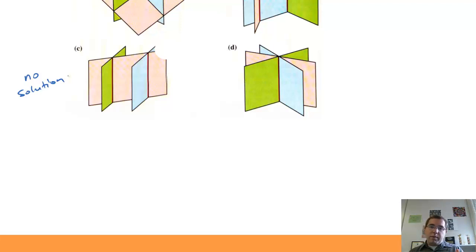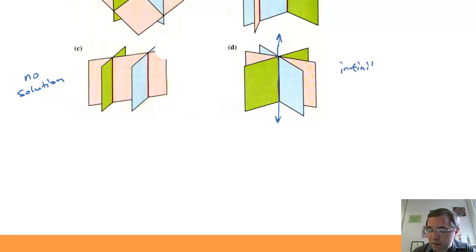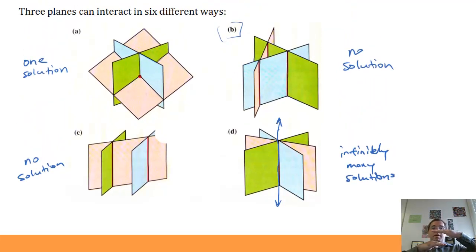Or all three planes can intersect together on exactly one line — giving infinitely many solutions, since every point on that line is a solution. We could give the equation of the line as the solution. It could also be the case that all three planes are parallel with no intersection, giving no solution. Or all three equations could have the same plane as their graph, giving infinitely many solutions with every point on those planes.